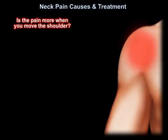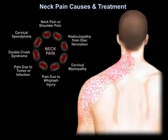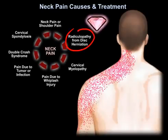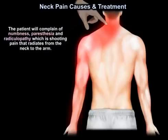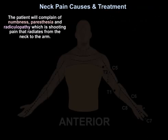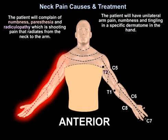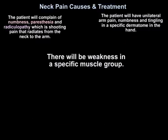If the pain is more provoked when you move the shoulder, then the shoulder itself may be the source of the pain. An important cause of neck pain is disc herniation. The patient will complain of numbness, paresthesia, and radiculopathy — which is shooting pain that radiates from the neck to the arm. The patient will have unilateral arm pain, numbness, and tingling in a specific dermatome in the hand, as seen in the diagram, and weakness in a specific muscle group.